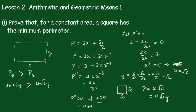Dividing both sides by 4 and taking out the common factor of 2, we get x plus y on 2 is greater than the square root of xy.